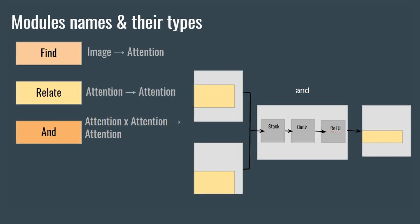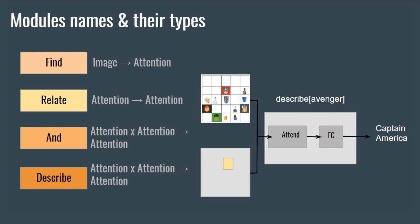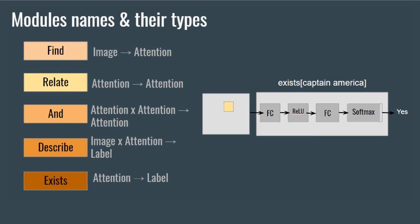The and module merges two attentions into a single attention. The output attention is only active in regions that are active in both inputs. The describe module takes an attention and the input image and maps both to a distribution over labels. For example, describe Avenger returns the name of Avengers in the required regions. The exist module takes an attention alone and maps it to a distribution over labels, and can be used to find the existence of a detected object as shown in the figure.